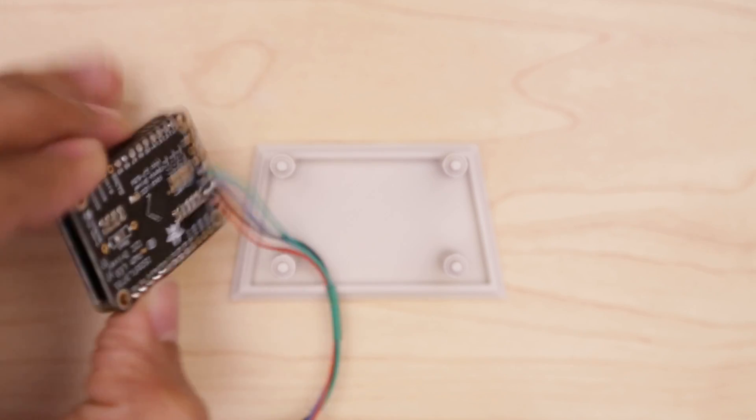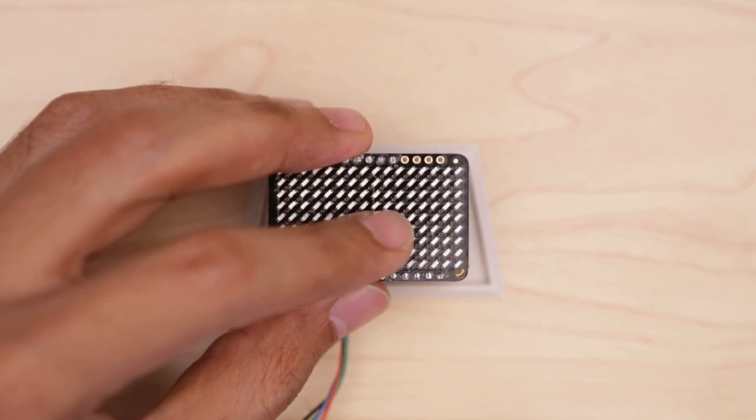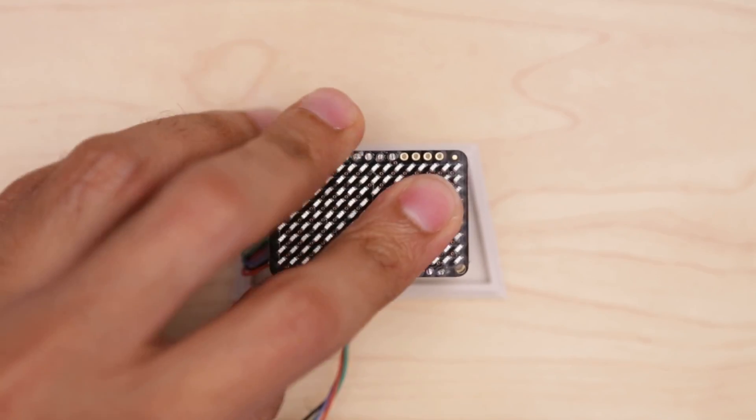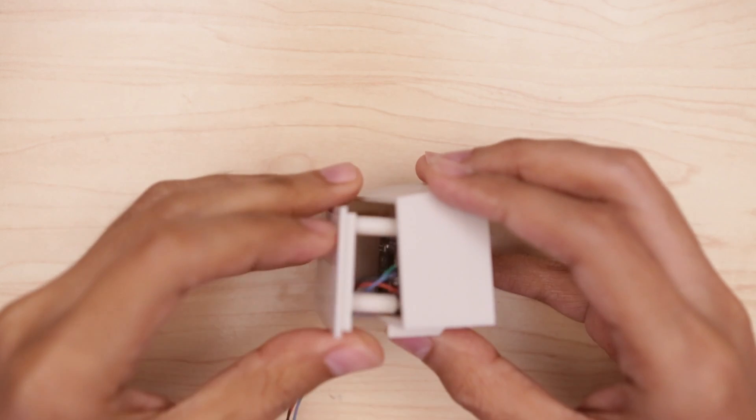The LED matrix mounts to the display cover by press fitting them together. Then we can install the cover to the frame of the display.